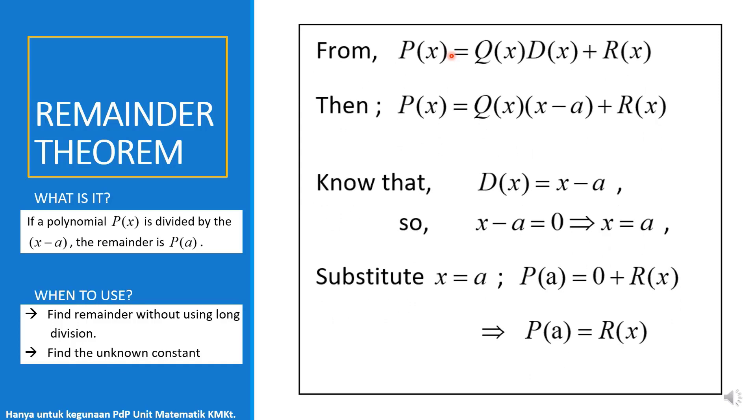So we look at how we get remainder is P(a). From the polynomial P(x) equals Q(x)D(x) plus R(x), and suppose we have a divisor is (x - a), from the divisor, we get the value of x, that is a, and we substitute into the equation.